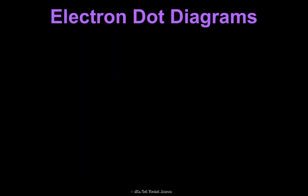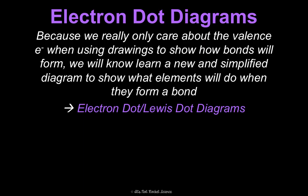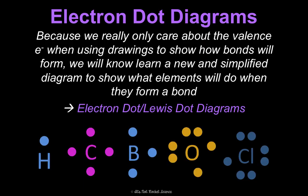Now I want to teach you a new type of drawing. The Bohr models are great, but for understanding how compounds form, they're a little complicated. All we really need to see are the valence electrons. So we're going to learn a simpler drawing called an electron dot diagram, or Lewis dot diagram. It's much, much simpler.